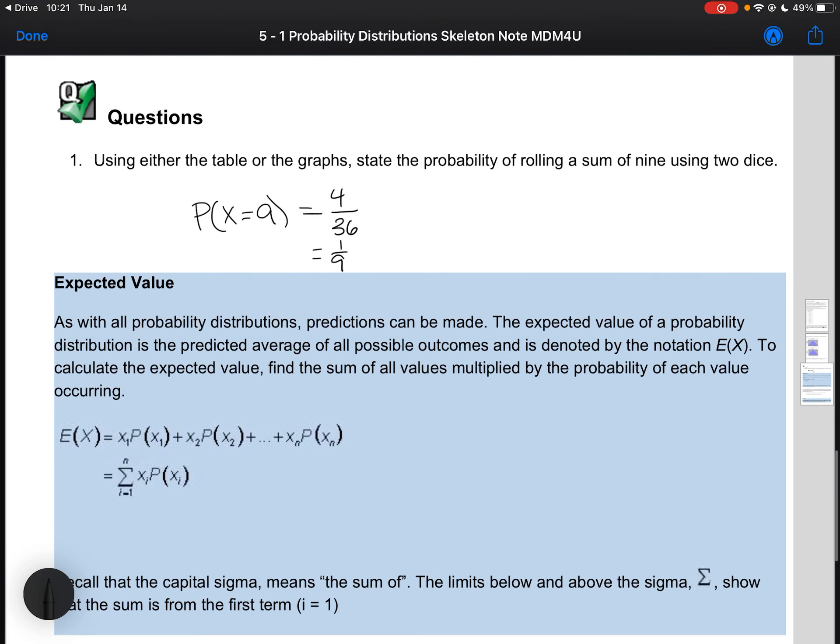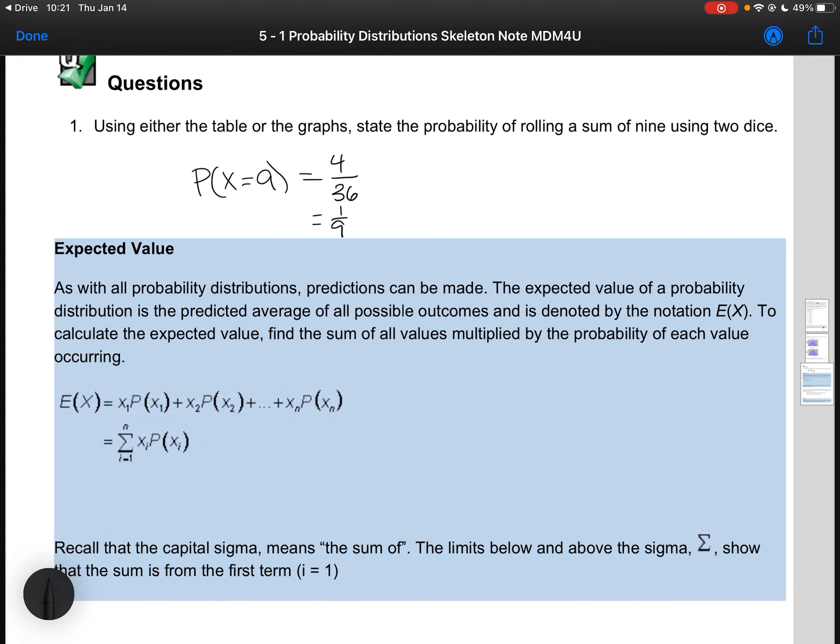You can also calculate the expected value of a probability distribution. In order to find the expected value, you're going to find the sum of all values multiplied by the probability of each value occurring. This is similar to calculating the weighted mean.